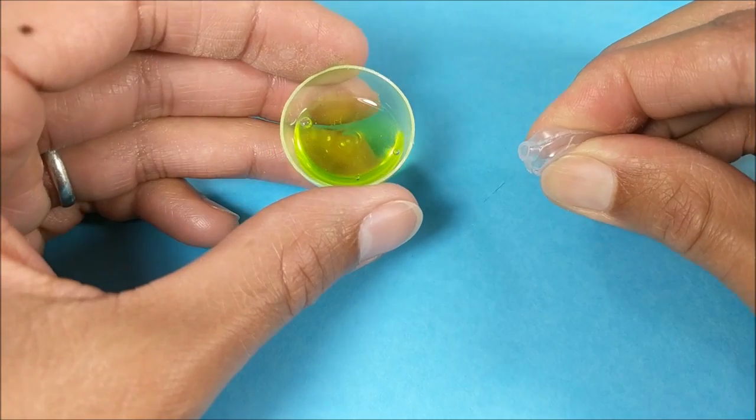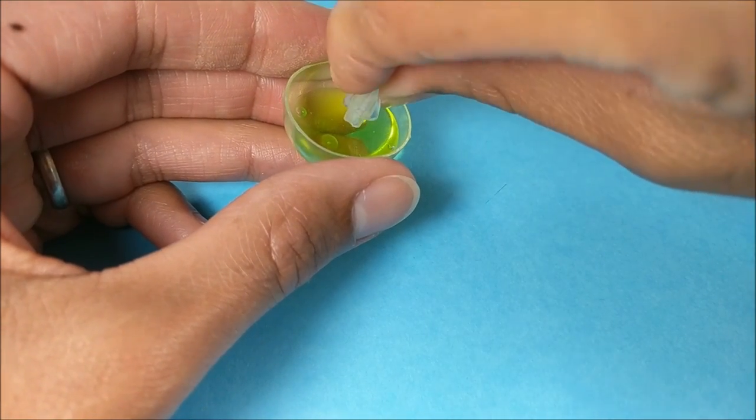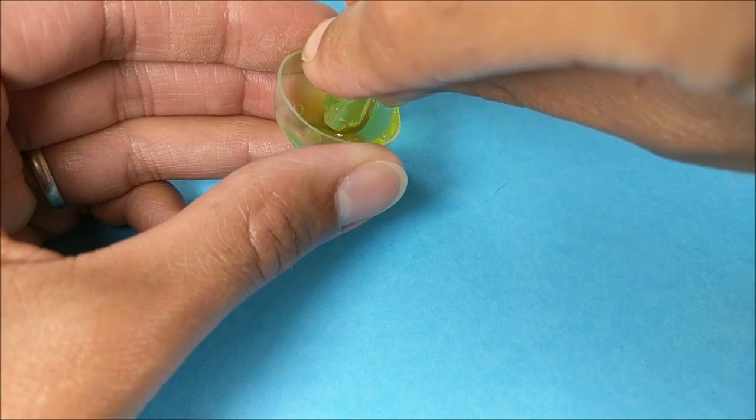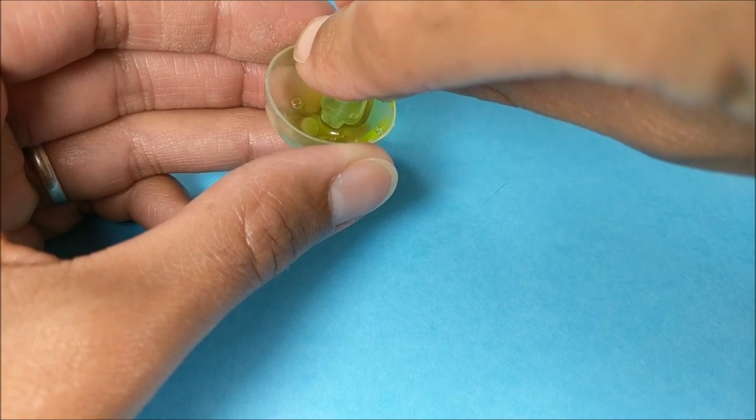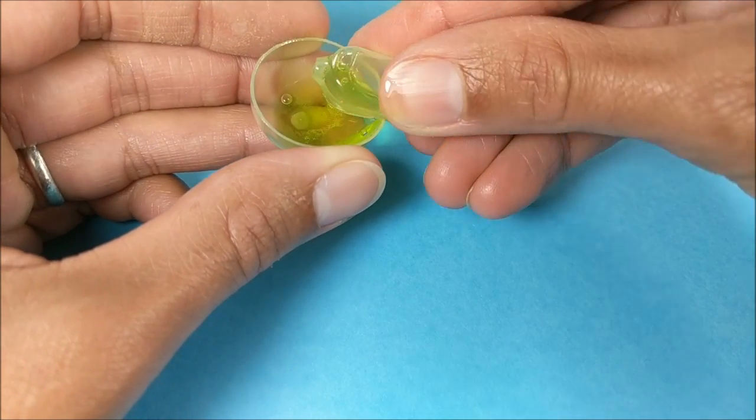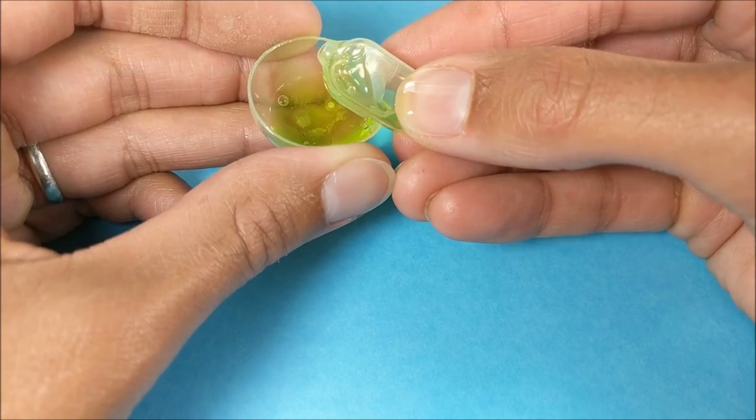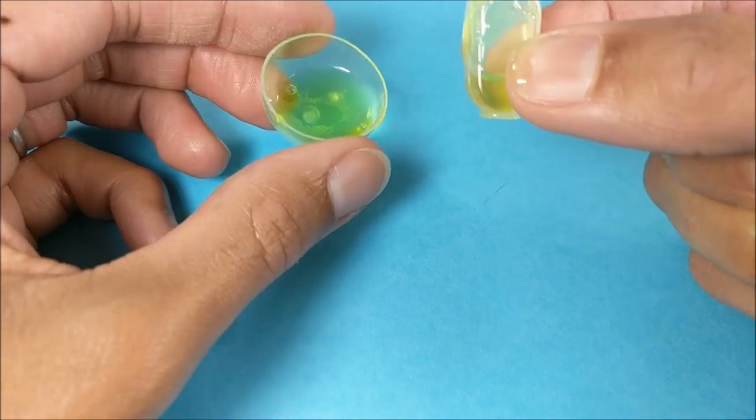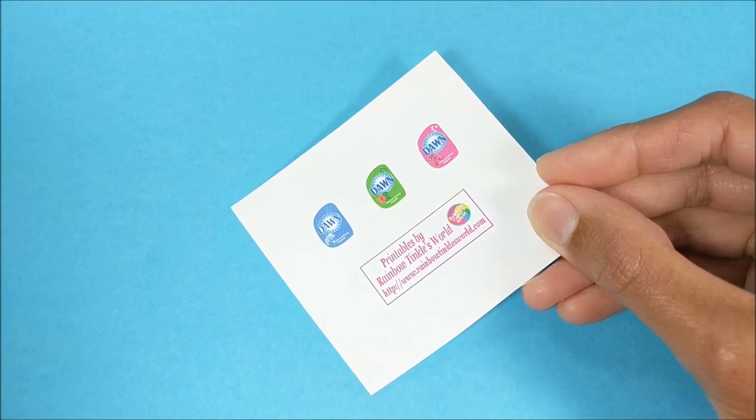Here I squeeze out all of the air and then slowly release until it sucks up the liquid. It seems like the slower you do it, the more liquid you can get. The labels are just a printable which you can access by clicking on the link in the description section.